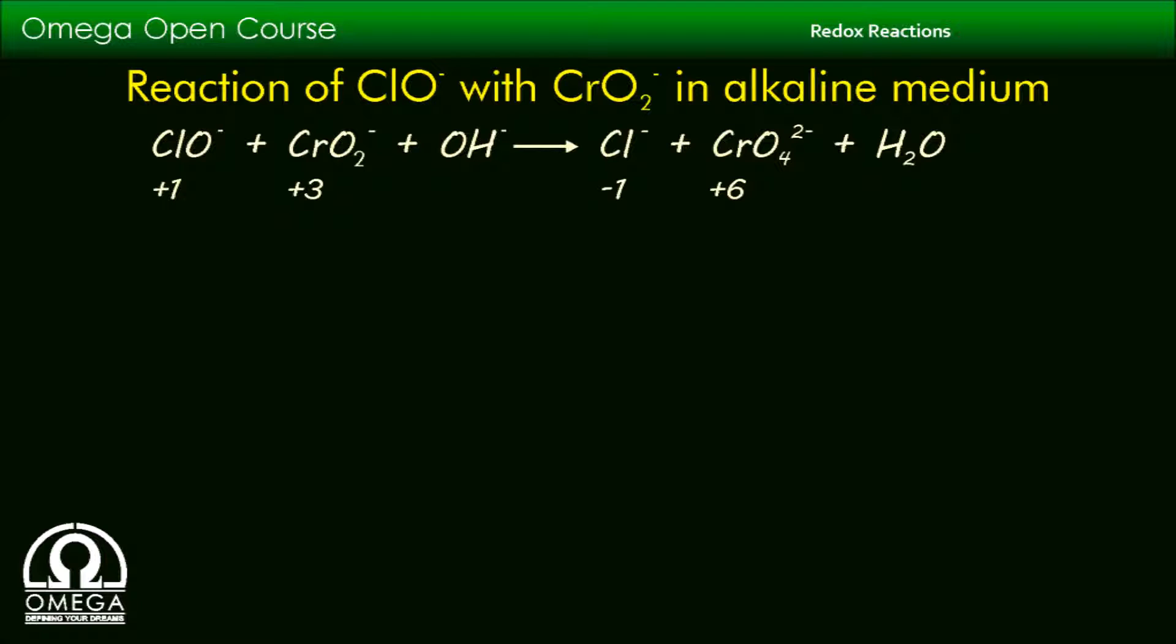Chromium is undergoing oxidation and chlorine is undergoing reduction. Let us consider the oxidation half. CrO₂⁻ is converted into CrO₄²⁻. Oxidation number of Cr atom increases from +3 to +6 and therefore 3 electrons are released in this oxidation process.